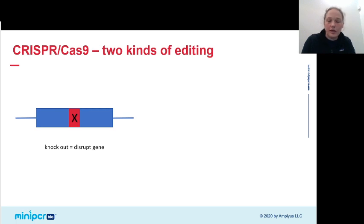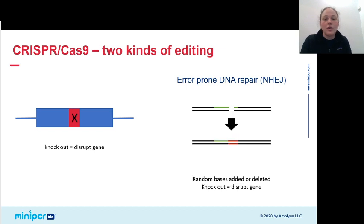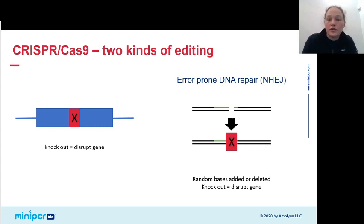The first is simply to disrupt the sequence of the gene so that it's no longer able to make a functional protein. This is called a knockout. And this relies on a mechanism of DNA repair called non-homologous end joining, or NHEJ. This is just a fancy way to say that the cell takes the two broken pieces of DNA and sticks them back together. In the process of sloppily sticking these two pieces back together, random bases are added or deleted at the site of the double-stranded break, causing a disruption in the gene sequence and a knockout.